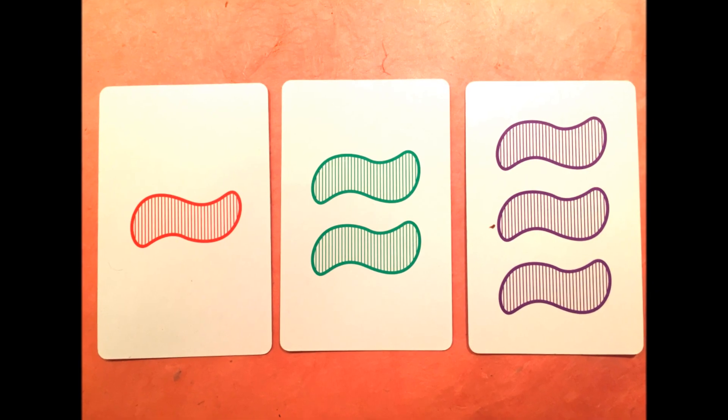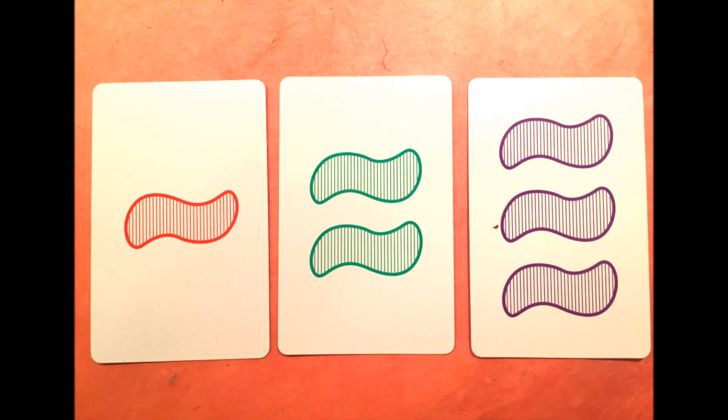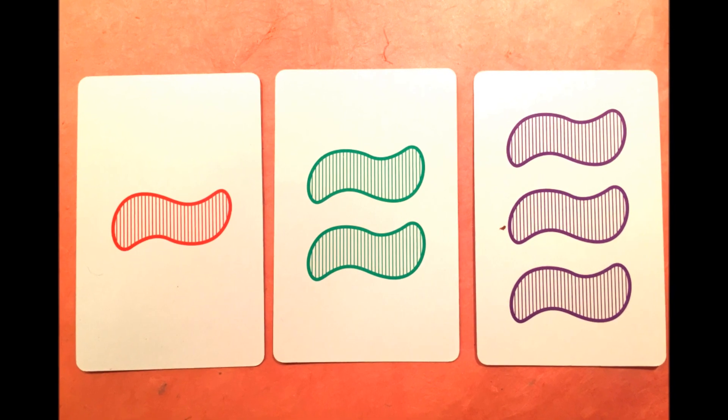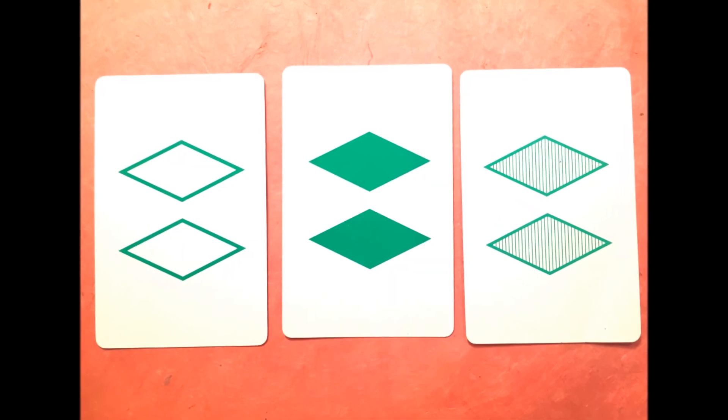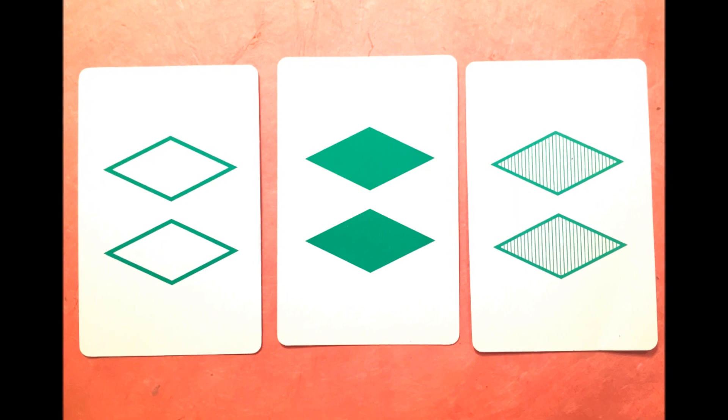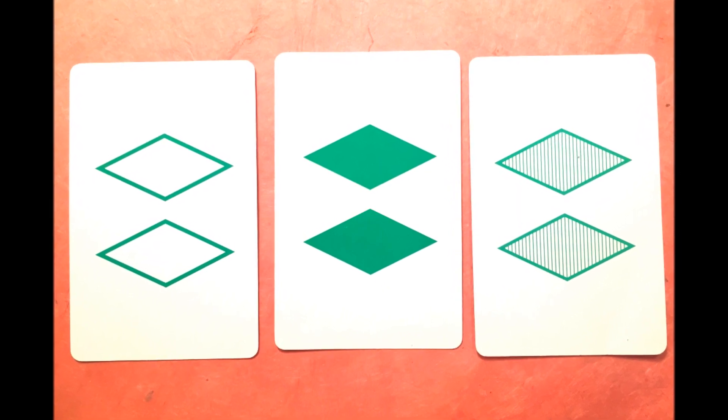So you just keep playing this until there are no more cards left in the deck. So here are some pictures of what other configurations would look like for a set. And these ones are all diamonds, and they're all green, and they're all two, but they all have different fills.